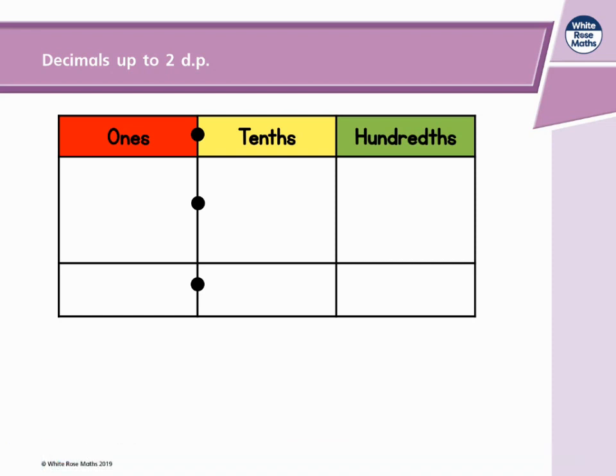In the place value grid on the screen, the first column represents ones. The next column along is the first decimal place and that represents tenths. The next column along is the second decimal place and that represents hundredths.